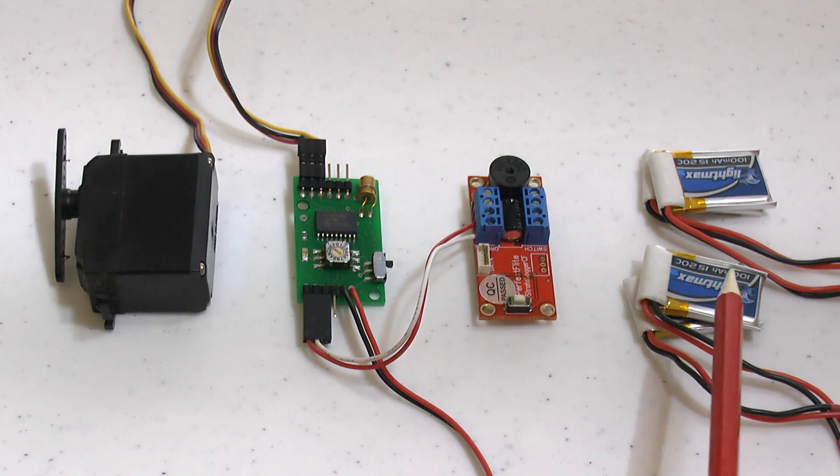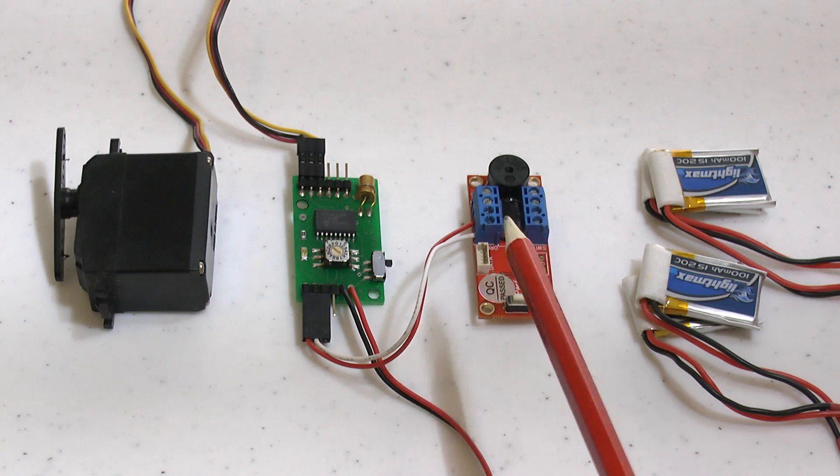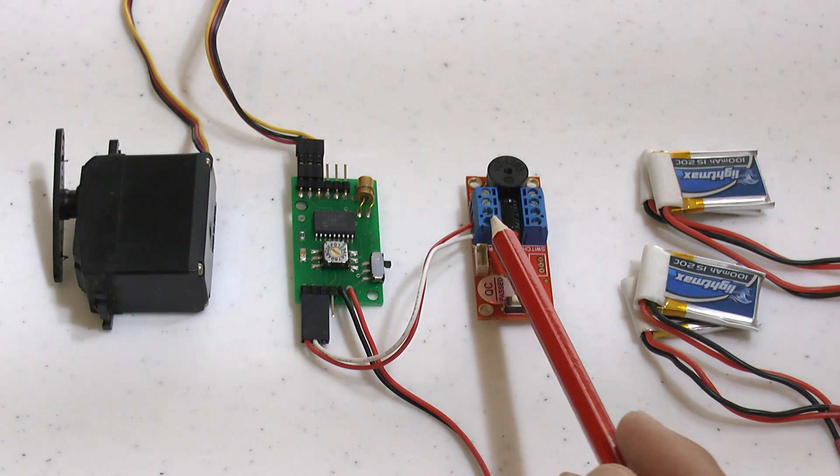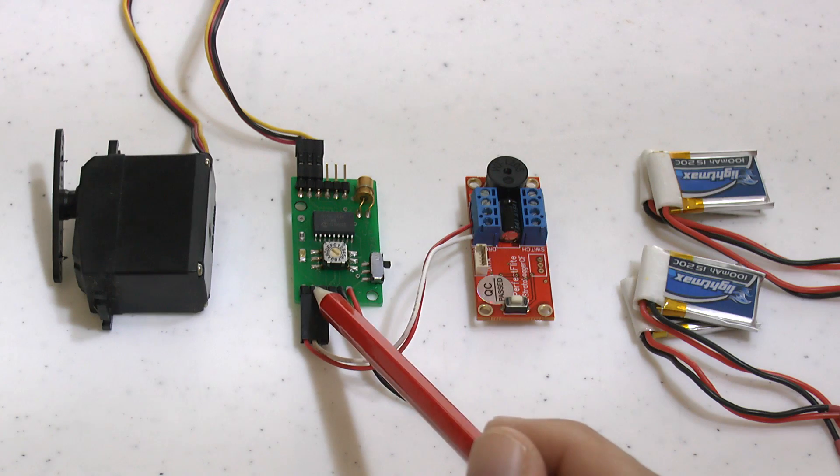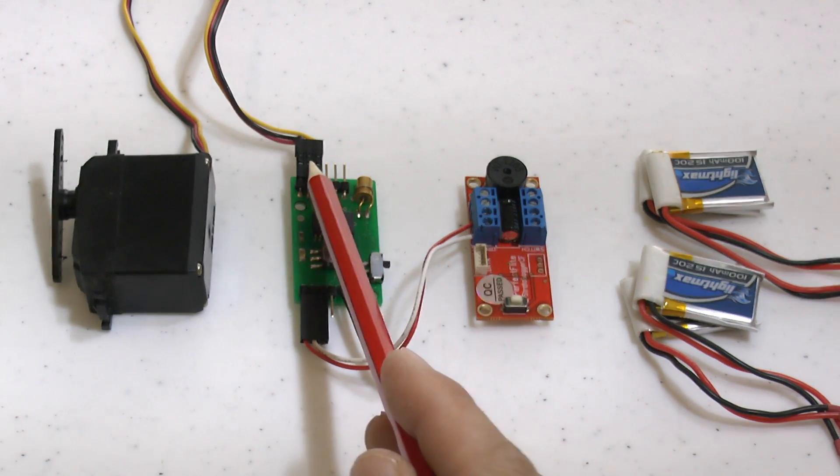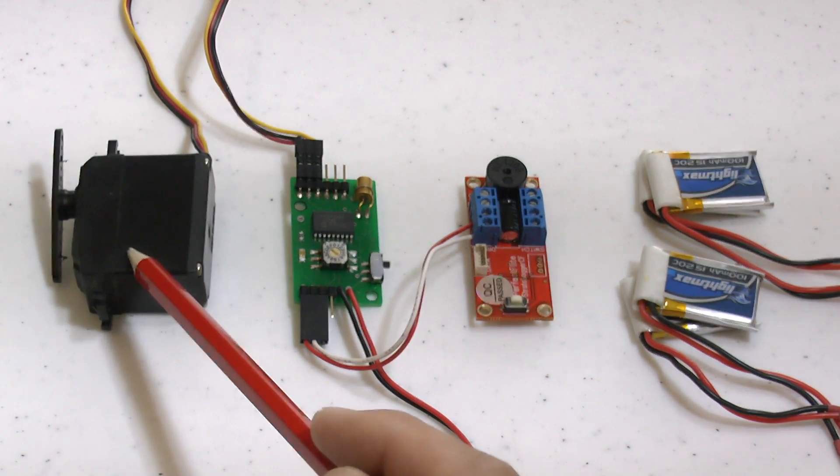We use the Stratologger to detect launch and apogee and get it to record the entire flight. We're using the drogue pyro output on the Stratologger as a trigger for the servo timer and the servo timer is directly connected to the deployment servo.